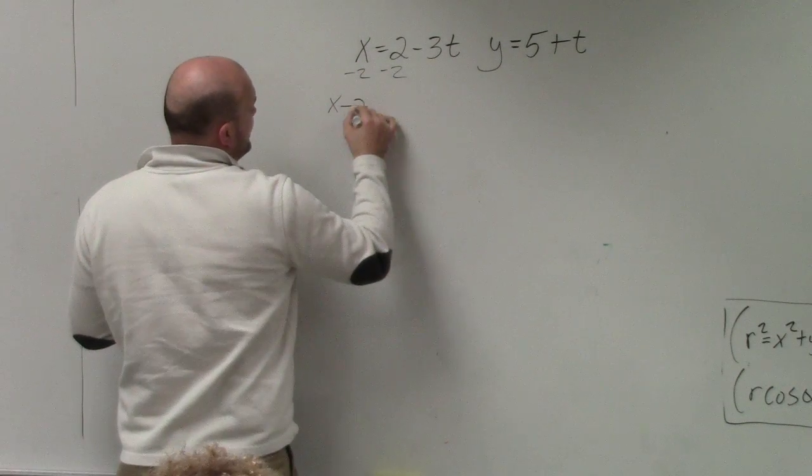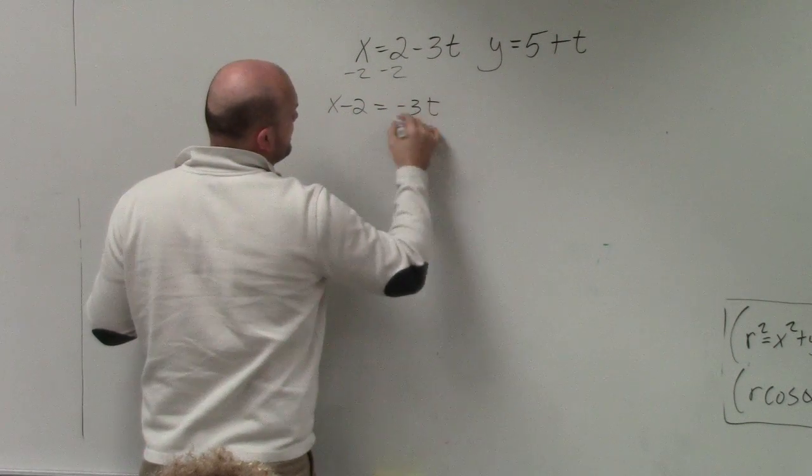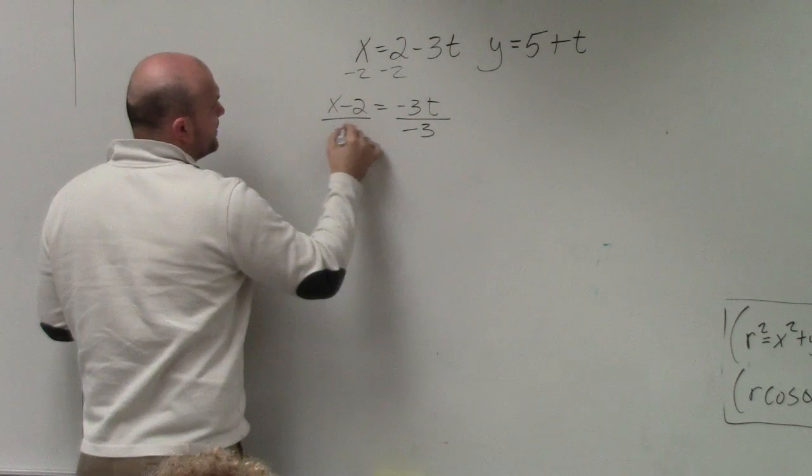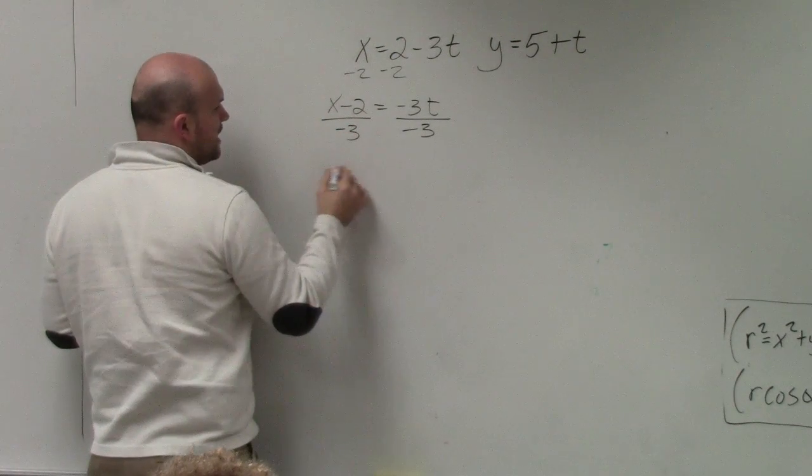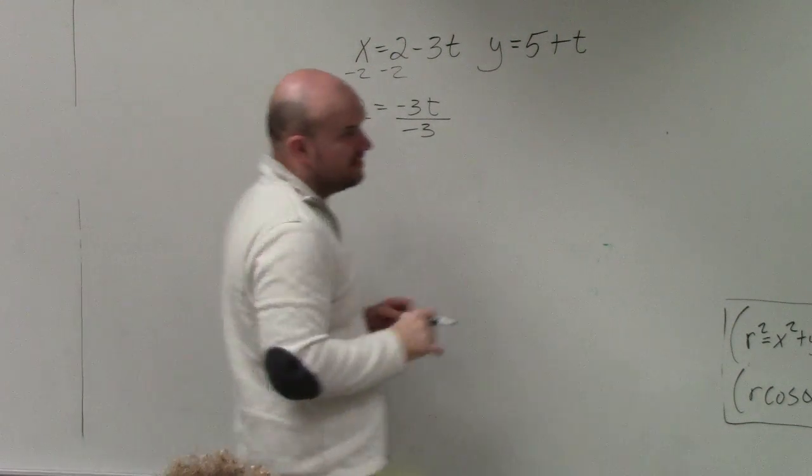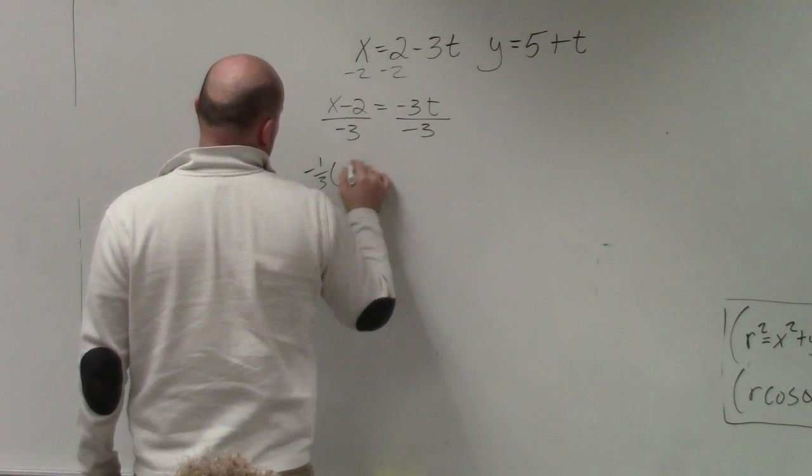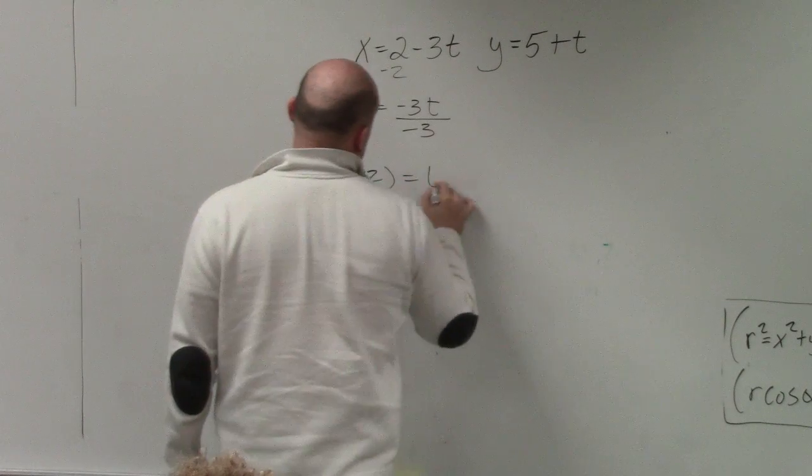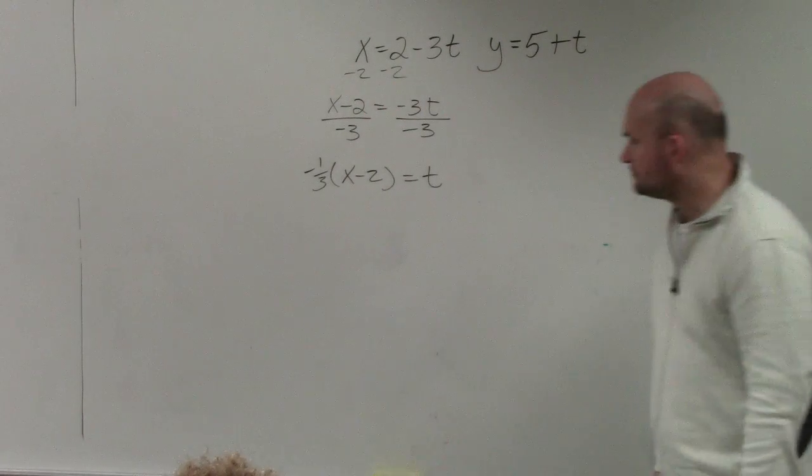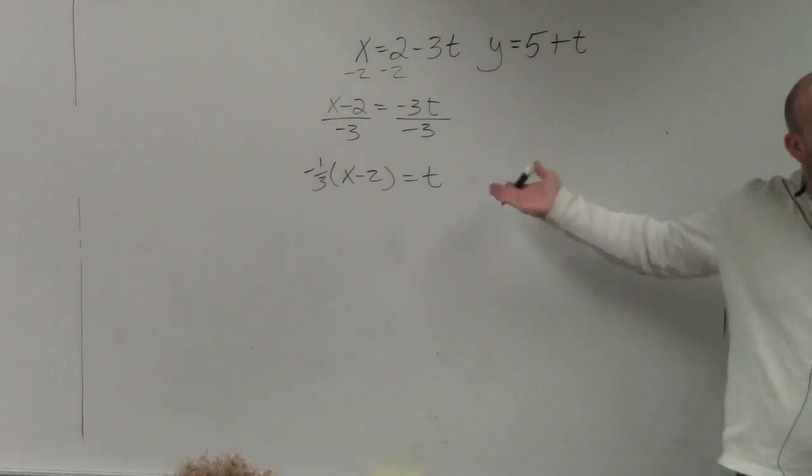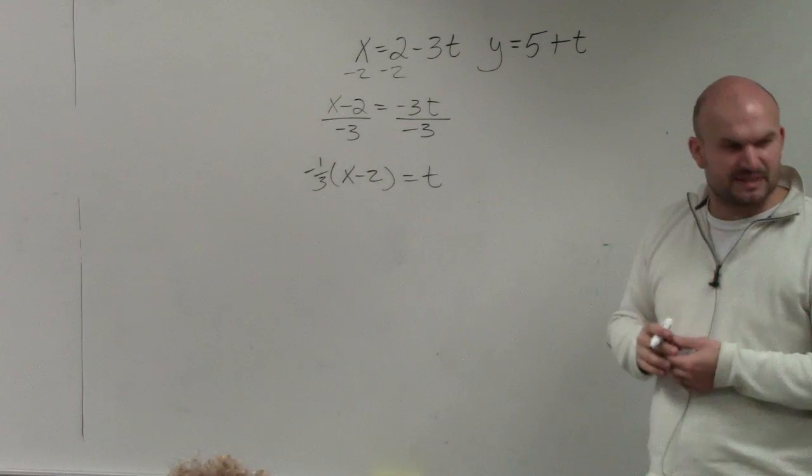So you have x minus 2 equals negative 3t, divide by negative 3. Usually we'd like to write this in this format. So you guys can see that it can be written like this. Does everybody kind of see that?